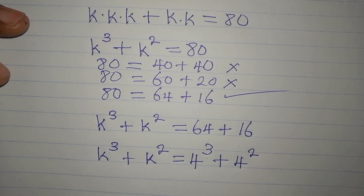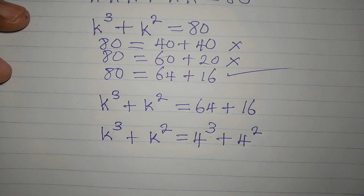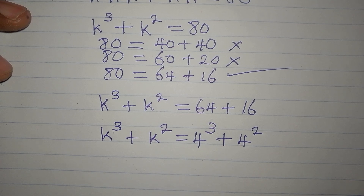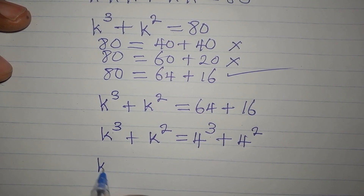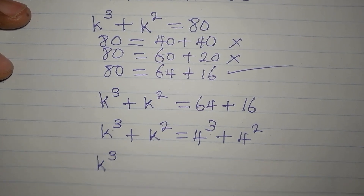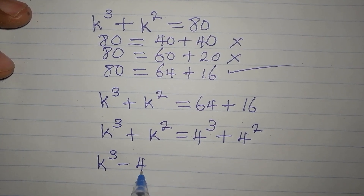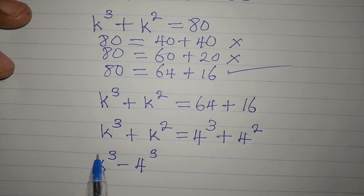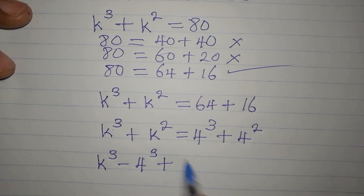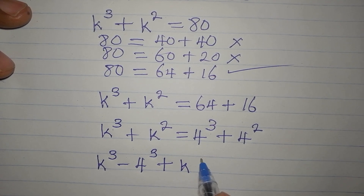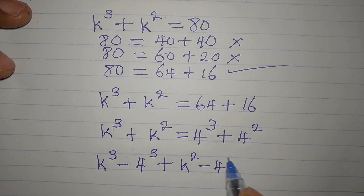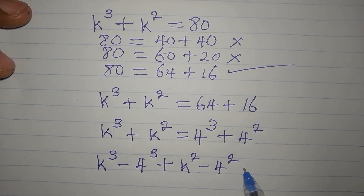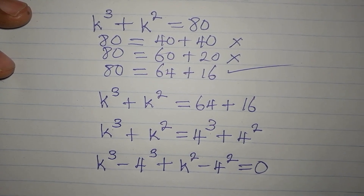If you look at the left-hand side and the right-hand side, they are in the same form, so let us rearrange. I'm going to bring everything to the left: k³ − 4³ + k² − 4² = 0.